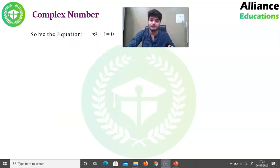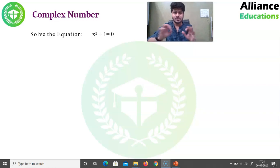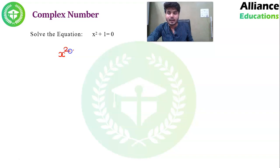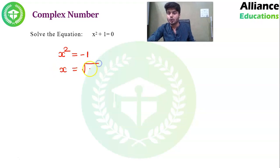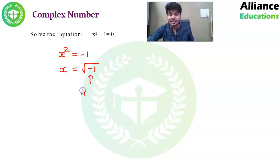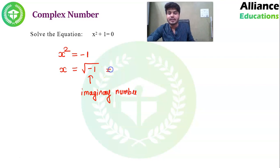तो आइए start करते हैं। Complex number होता क्या है यह जानेंगे सबसे पहले। आपके सामने screen पे एक equation है x² + 1 = 0। इस equation को हम solve करेंगे। x² as it is रखेंगे, +1 दूसरी side में जाएगा तो minus 1 होगा। Then x = √(-1)। दोनों side में square root लेते हैं तो root minus 1 मिलता है। आज तक हमने देखा है कि root के अंदर negative number नहीं आना चाहिए। अगर root के अंदर negative number आता है तो यह imaginary number कहलाता है। This imaginary number is represented by Greek letter i, Iota।